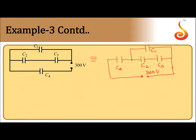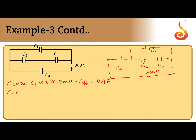C1 and C4 are 100 picofarad; C2 and C3 are 200 picofarad. Now C2 and C3 are in series — both are 200 picofarad, so the effective capacitance of these two will be equal to 100 picofarad. Now C1 and the series combination of C2 and C3 — these two are in parallel.